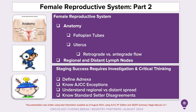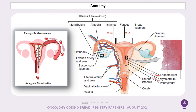Melissa is going to jump right into staging. This is the standard drawing of the uterus, fallopian tubes, ovaries, and vagina. The endometrium, which is C54.1, as shown in the histology side, is epithelial tissue. That's lighter in color than the myometrium, which is smooth muscle found just to the right of that endometrium. The myometrium is C54.2.